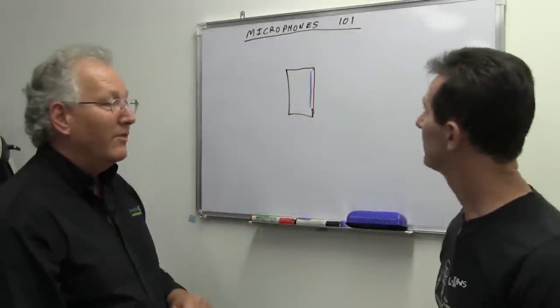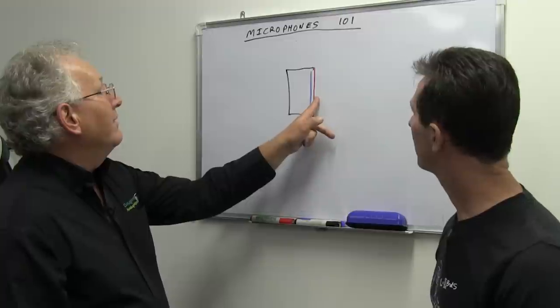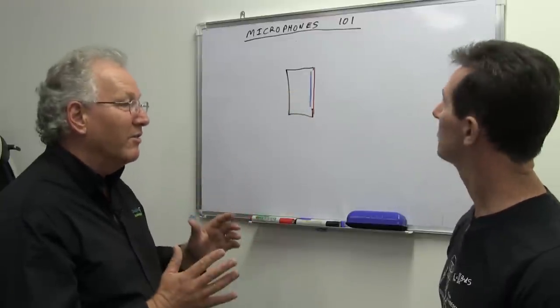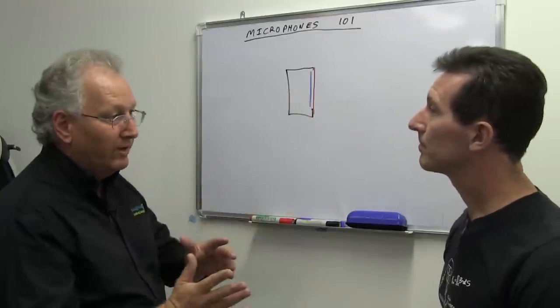So back to our omni microphone. I've drawn the diaphragm there and the back plate there, because this is generally a condenser type microphone, whether electret or externally polarized.